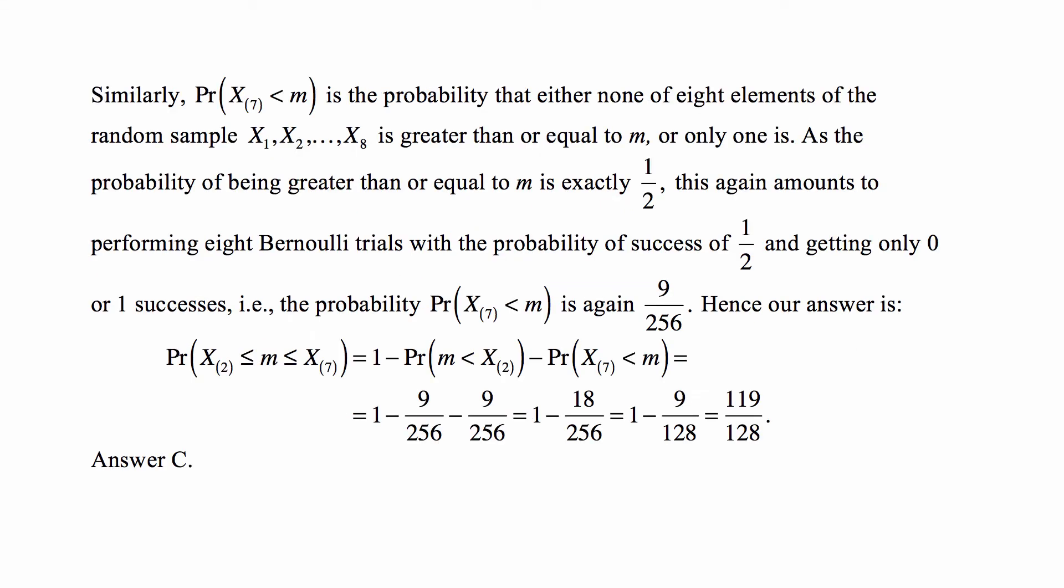Similarly, the probability that x_7 is less than m is the probability that either none of eight elements of the random sample is greater than or equal to m or only one is. As the probability of being greater than or equal to m is exactly one half, this again amounts to performing eight Bernoulli trials with the probability of success of one half and getting only zero or one successes.